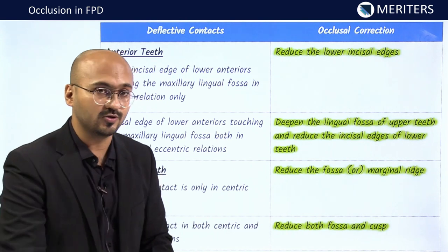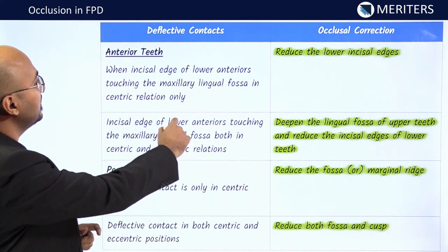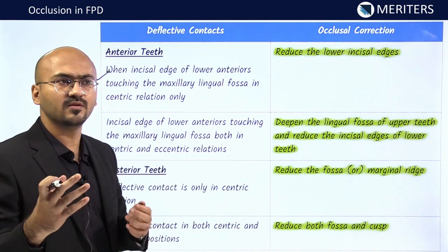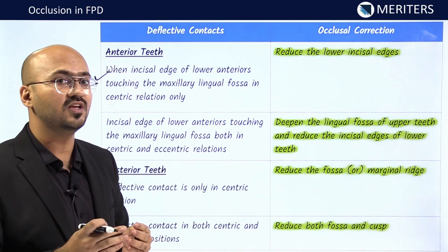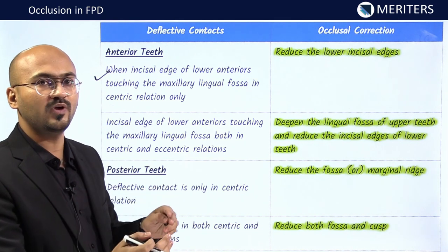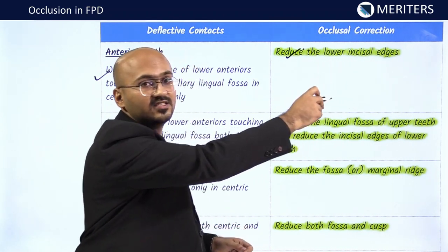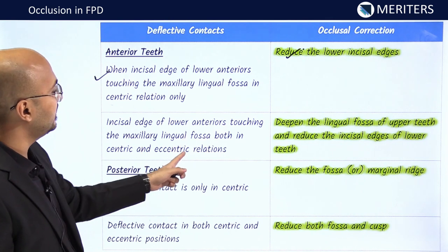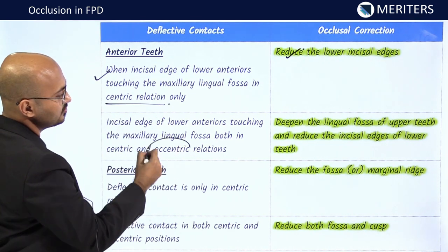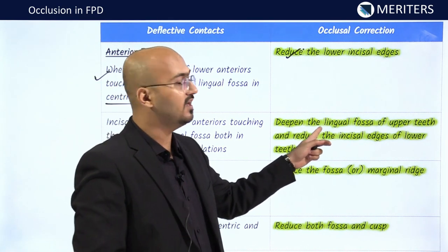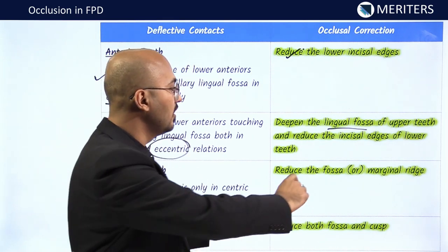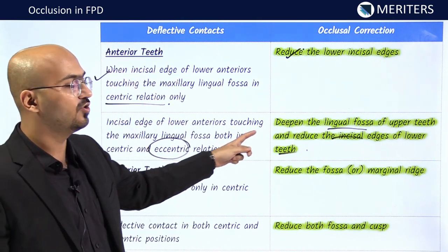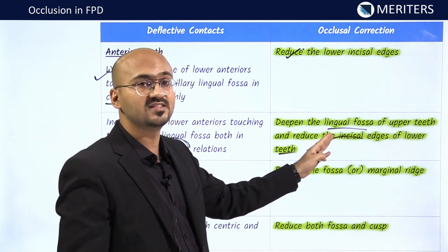Deflective contacts are interferences corrected using articulating paper. When the incisal edge of a lower anterior touches the maxillary lingual fossa in centric relation only, reduce the lower incisal edges. When the incisal edge of a lower anterior touches the maxillary lingual fossa in both centric and eccentric relation, you do a combination: deepen the lingual fossa of the upper teeth and reduce the incisal edge of the lower teeth.